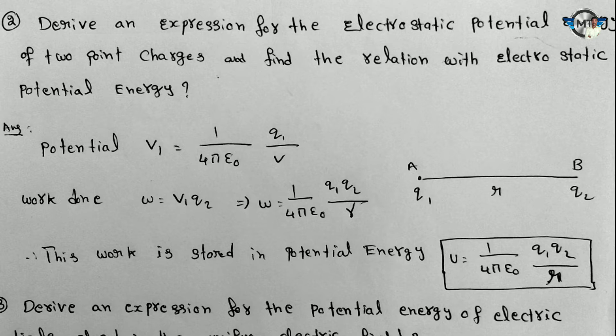The potential formula is V is equal to 1 by 4 pi epsilon naught, q1 by r. Next, work done W is equal to V1 into q2. That is equal to W is equal to 1 by 4 pi epsilon naught, q1 q2 by r. Here we have two charges q1 and q2. The total potential energy U is equal to 1 by 4 pi epsilon naught, q1 q2 by r.